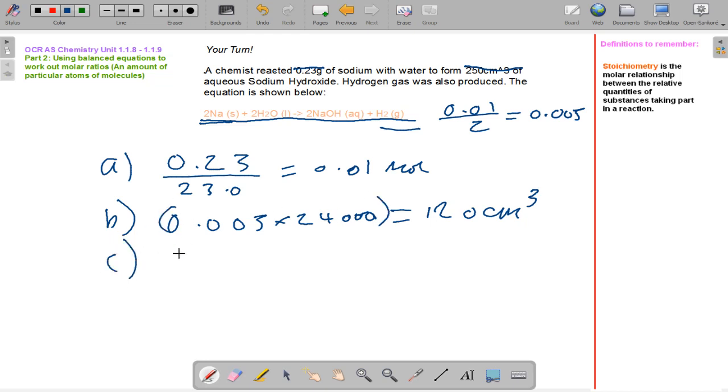And part C, looking at the equation again, 2 to 2 means 1 to 1. So 0.01 times 1000 all over 250 equals 0.04 moles per decimetre cubed.